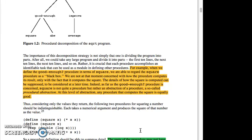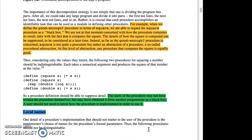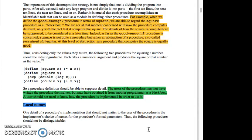The details of how the square is computed can be suppressed, to be considered at a later time. Indeed, as far as the good enough procedure is concerned, square is not quite a procedure, but rather an abstraction of a procedure, a so-called procedural abstraction. At this level of abstraction, any procedure that computes the square is equally good. Thus, considering only the values they return, the following two procedures for squaring a number should be indistinguishable. Each takes a numerical argument and produces the square of that number as the value. Define the square of x is multiply x and x, or define the square of x to be the exponent double the log of x, or define double x to be x plus x.